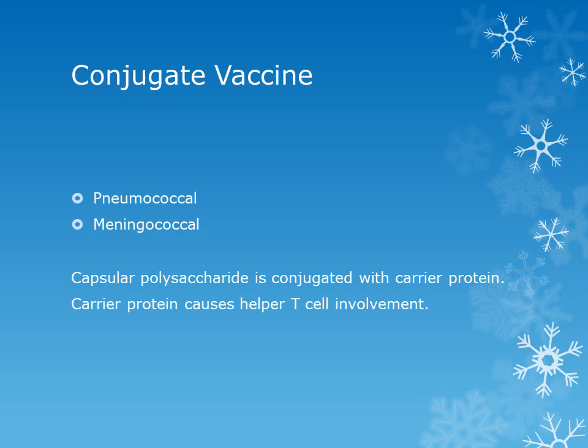These conjugate vaccines are given against microorganisms containing polysaccharide capsules. The important examples of diseases against which conjugate vaccines are given are pneumococcal infection, meningococcal infection, and Haemophilus influenzae infection. These three vaccines have been recently introduced by the Ministry of National Health Services in the EPI schedule.